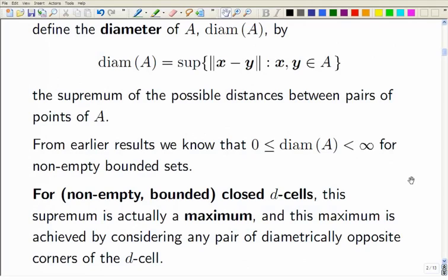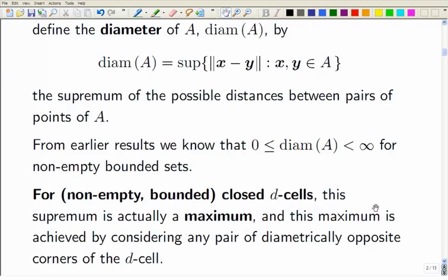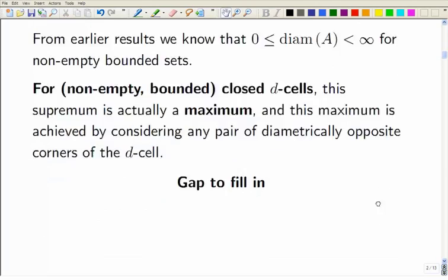And you don't normally expect to get two points a maximum distance apart, but for closed d-cells, it's different. You actually do get a pair of points that are as far apart as possible. For non-empty closed d-cells, what you do is you take a pair of points that are at diametrically opposite corners. So you take one point at the bottom left near, well, three-dimensional speaking, bottom left nearest point and the other one at the top right furthest point or something like that, and they'll be diametrically opposite. There's lots of choices.